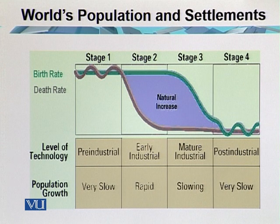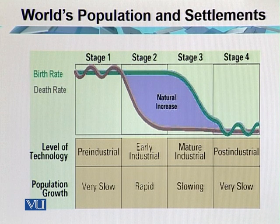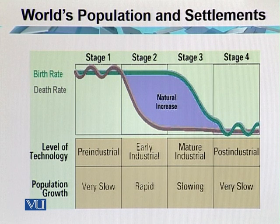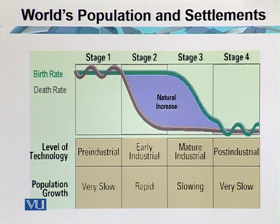In stage one, during the pre-industrial era, population growth was very slow because the level of technology was low and awareness was also lacking. In stage two, the early industrial era, rapid growth occurred. Awareness in society increased, and transportation and communication networks changed.